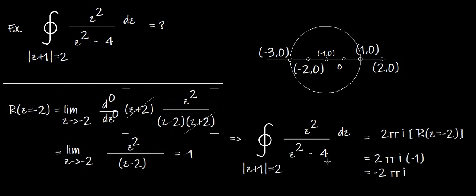The final integral equals 2πi times the sum of residues. With a single residue of −1, we get 2πi · (−1) = −2πi. That is the answer to this problem.